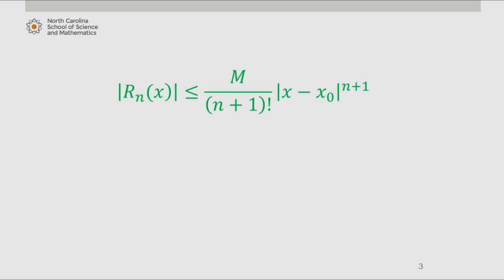So according to the theorem, the error bound is bounded above by 0.682 divided by (n+1) factorial times the absolute value of x minus x_0 to the (n+1) power.